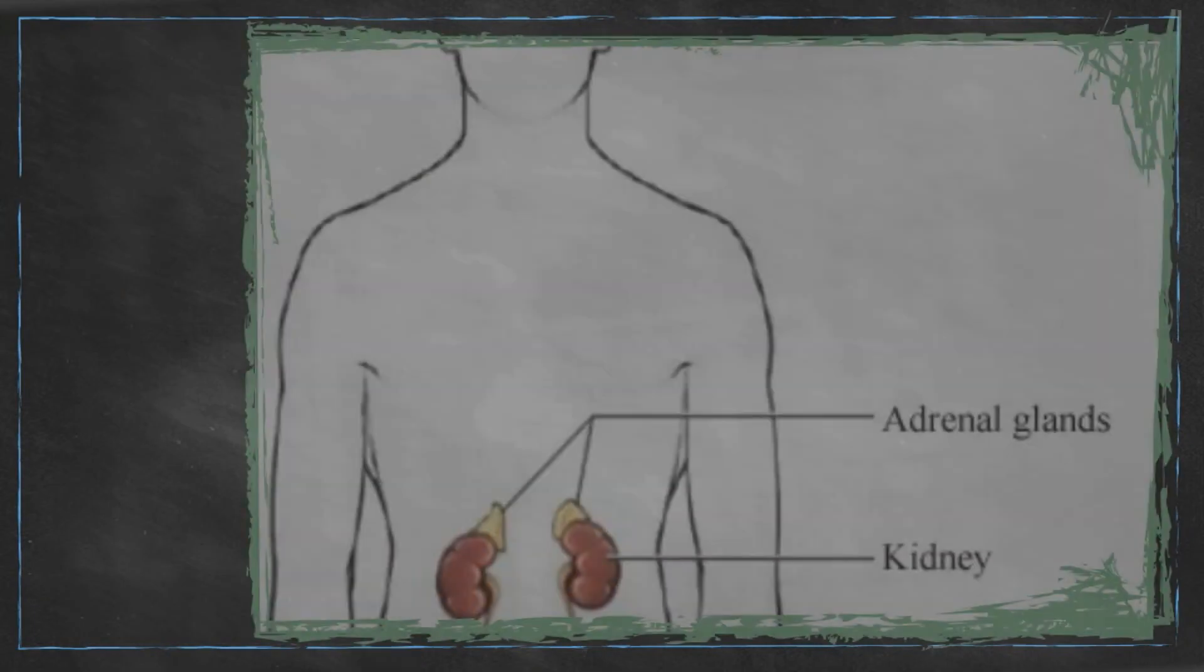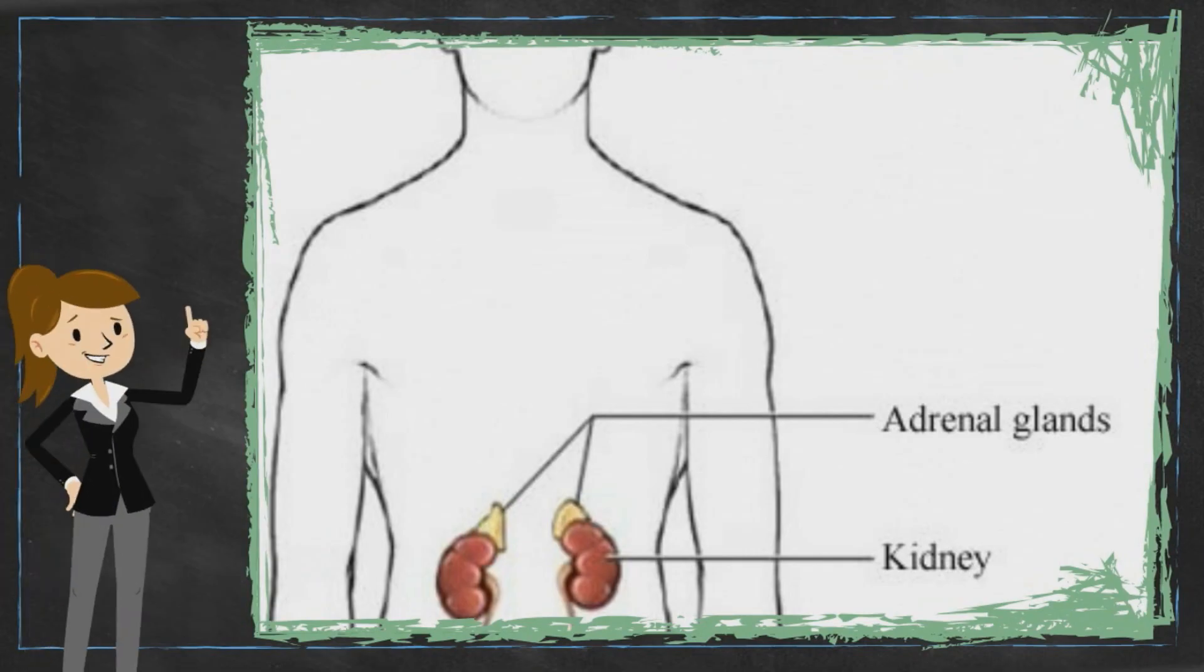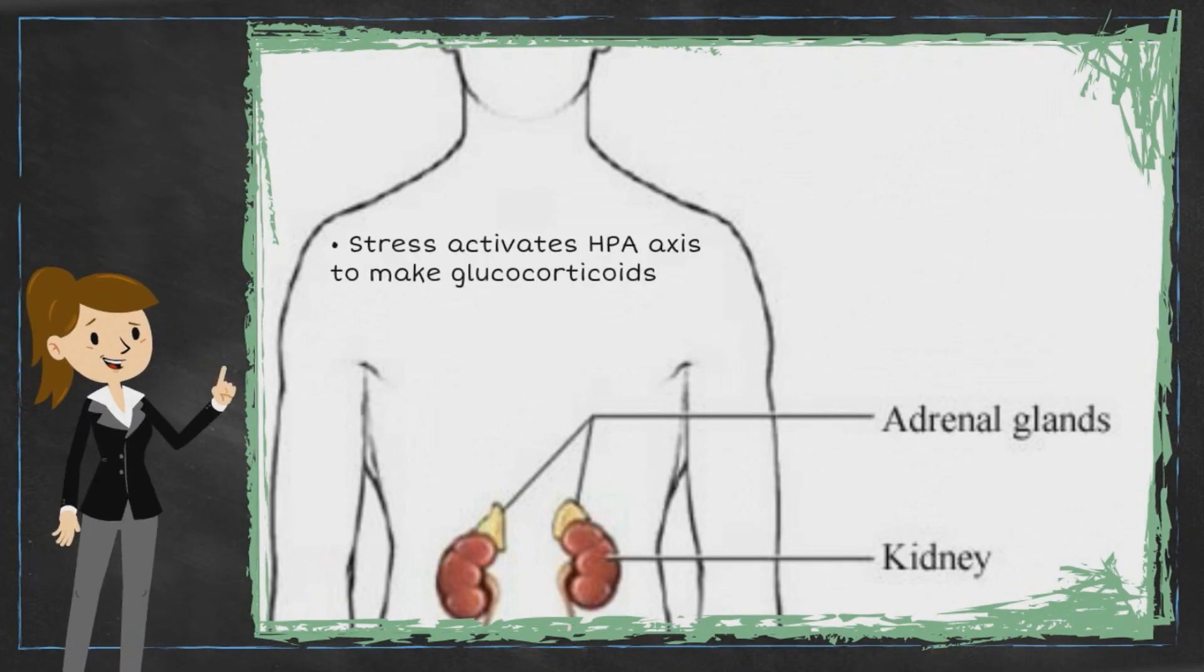Your HPA axis, or hypothalamic-pituitary-adrenal axis, is an important and complex system that regulates many hormones and signaling processes in your body. The adrenal glands right above your kidneys secrete glucocorticoids such as cortisol. Cortisol suppresses the immune system and reduces inflammation.